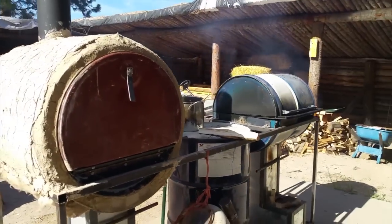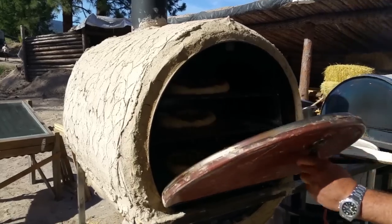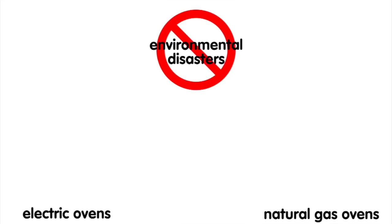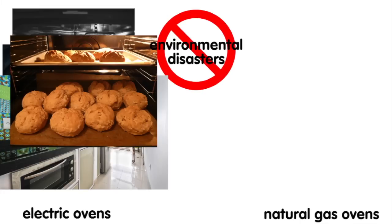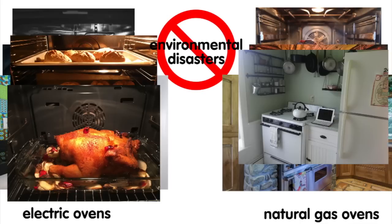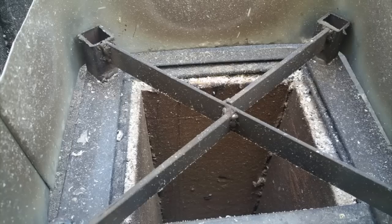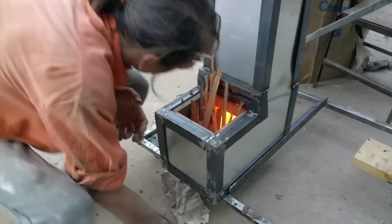A rocket oven is better than any other kind of oven. It does not have the environmental disasters associated with electric or natural gas ovens. Unlike cob ovens or old school wood cook stoves, a rocket oven burns clean and with much less wood.